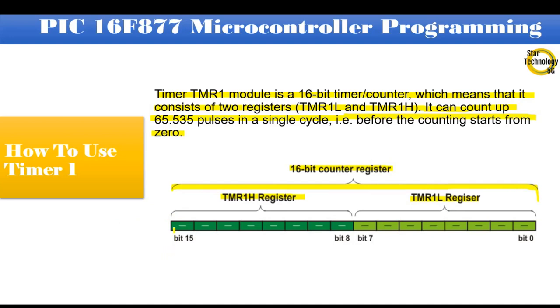TMR1H holds higher bits of data, starting from bit 8 to bit 15. TMR1L holds lower bits of data, starting from bit 0 to bit 7.